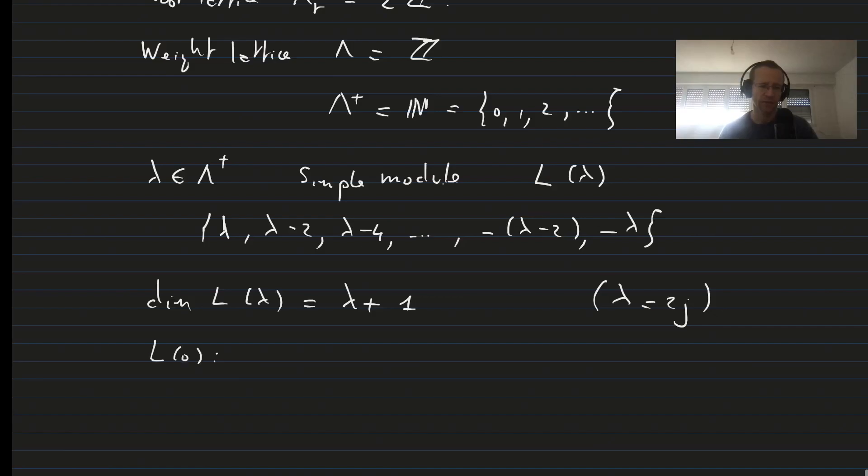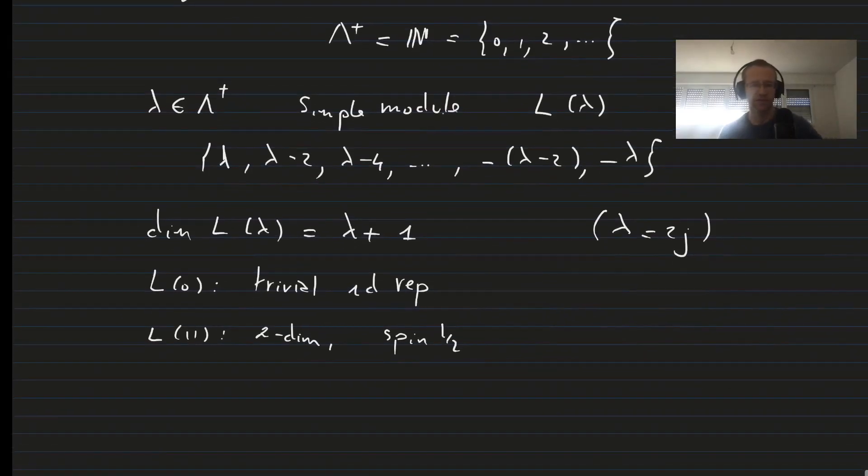So in particular, L of 0 is the trivial one-dimensional representation. L of 1 is the two-dimensional representation, also sometimes called spin a half when we go to SU2 representation, which is a particular real form of SL2C. And then L of 2 is the three-dimensional representation, which is the adjoint.